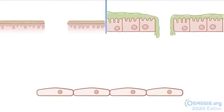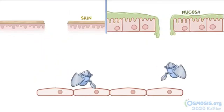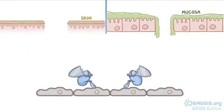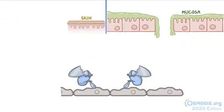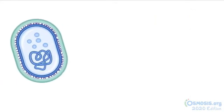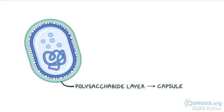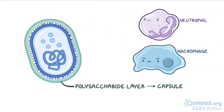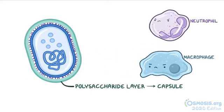Haemophilus ducreyi enters the body through mucosal and skin breaks and has a number of virulence factors that are like assault weaponry, helping it attack and destroy host cells and evade the immune system. Haemophilus ducreyi is encapsulated, so it has a polysaccharide layer called a capsule that acts like a shield, protecting the bacteria against phagocytic cells like macrophages and neutrophils.